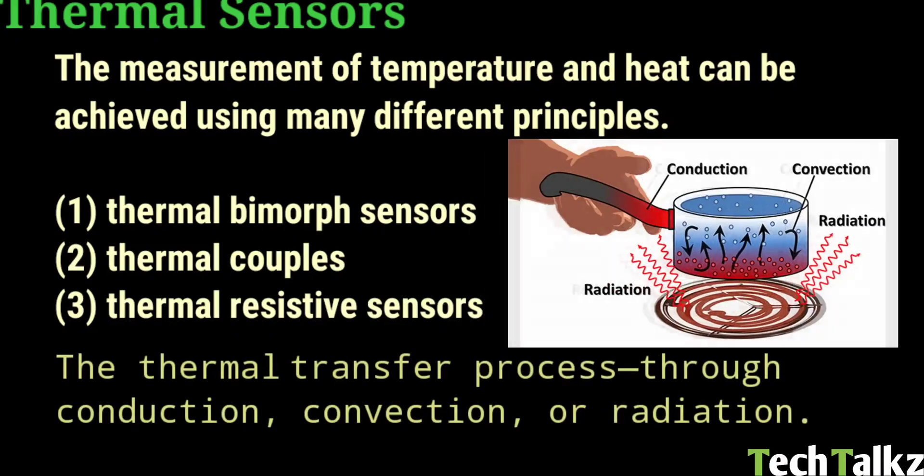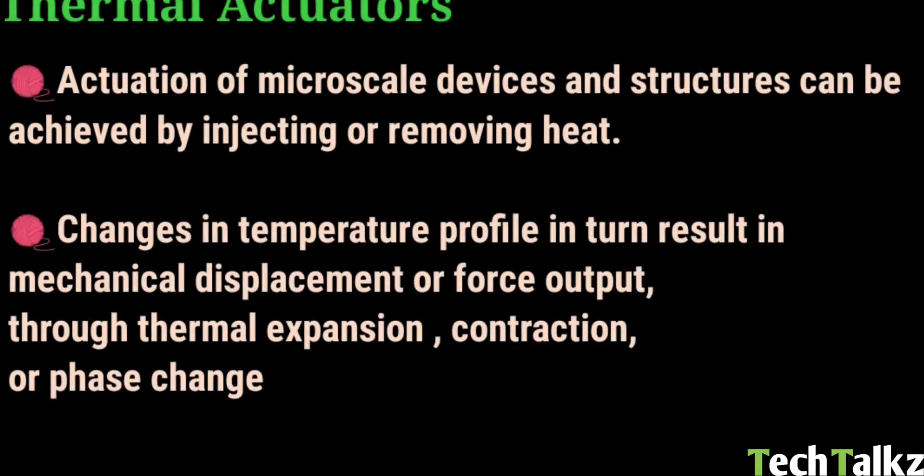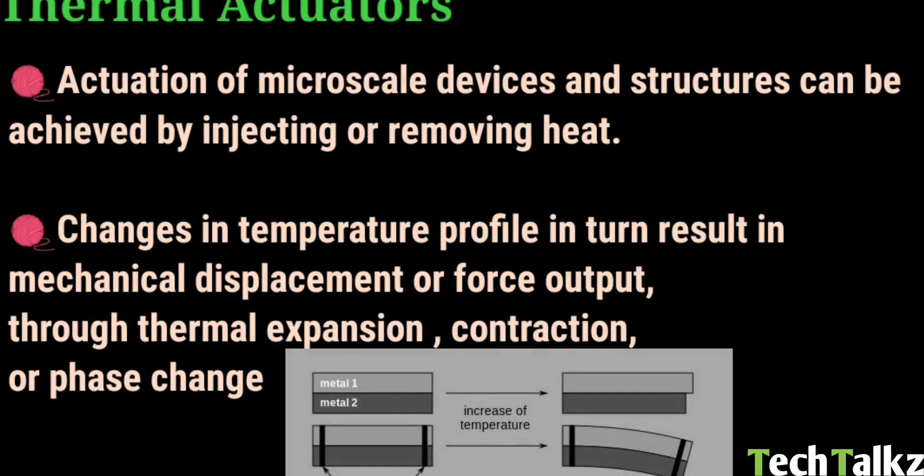Commonly the thermal transfer process can be through conduction, convection or through radiation. Next, thermal actuators. The actuation of microscale devices and structures can be achieved by injecting or removing heat. Changes in temperature profile will result in mechanical displacement or force output through thermal expansion or contraction or through phase changes.